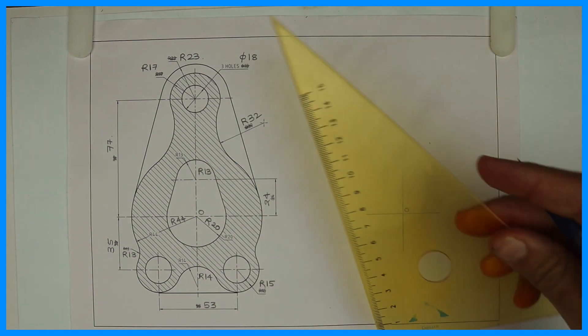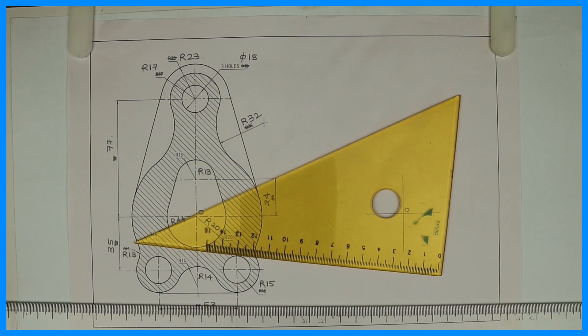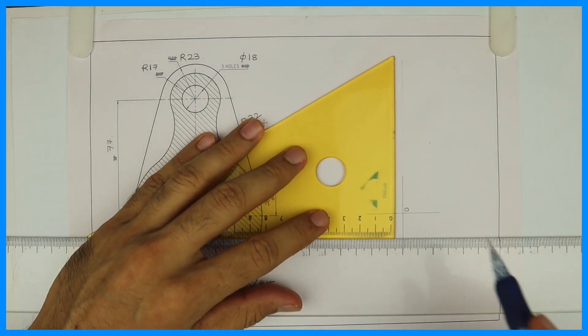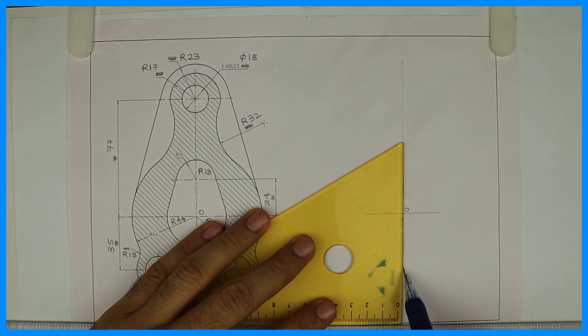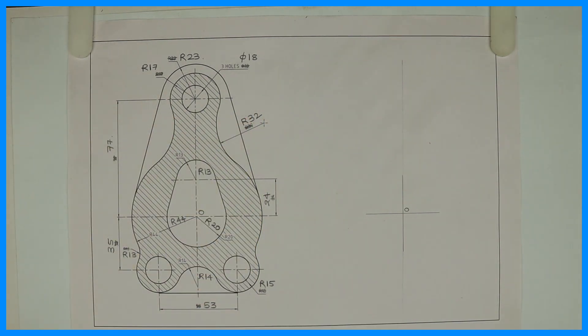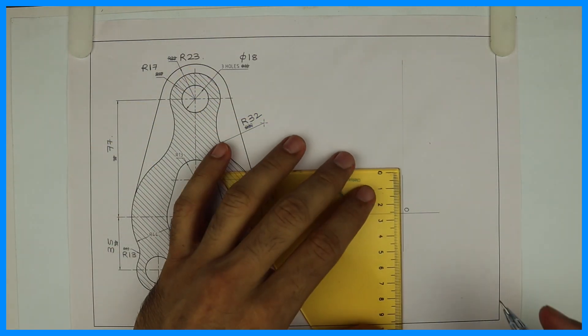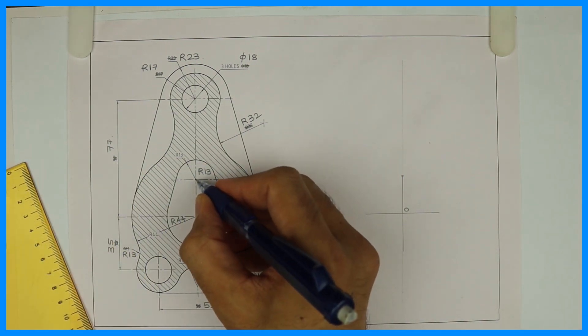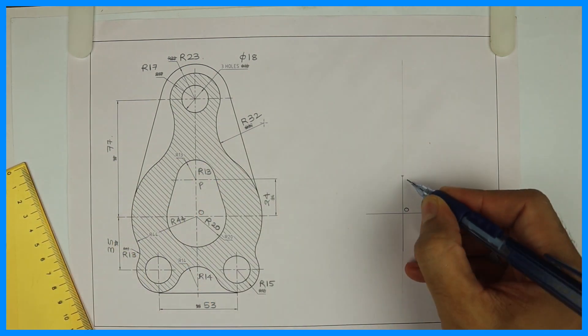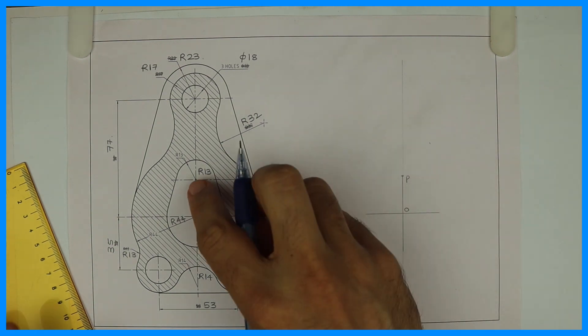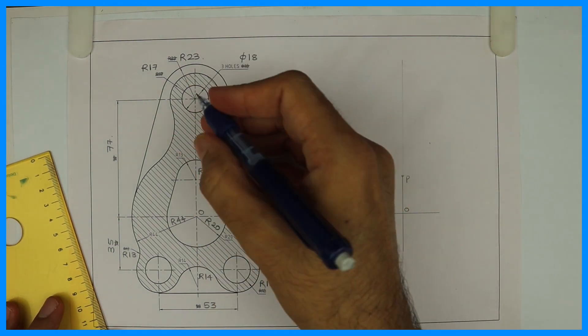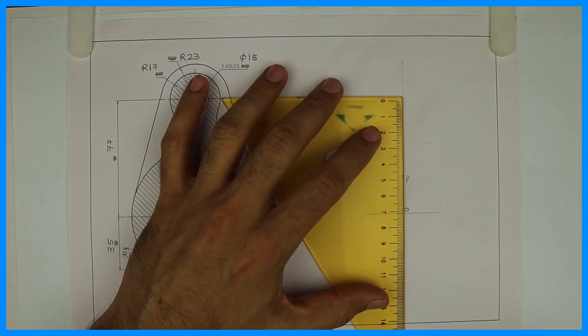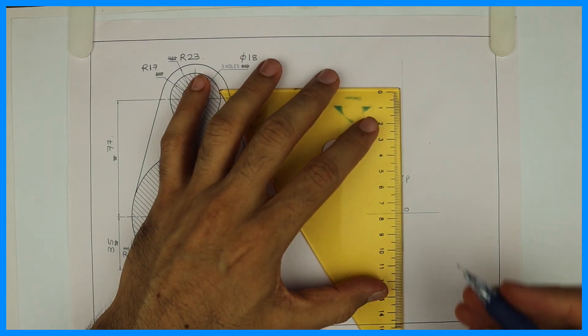We will draw this line first. First is 24. O to P is 24. And O to Q is 77. So we will mark these two distances.